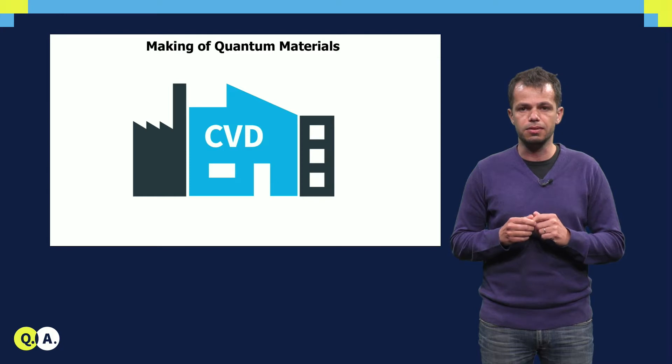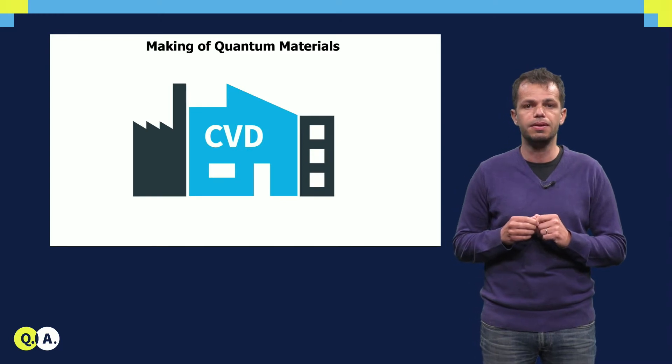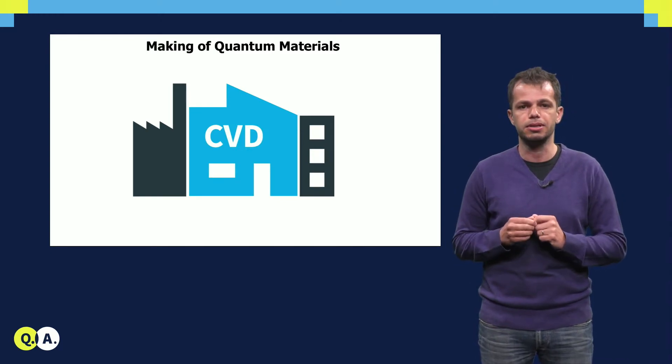Chemical vapor deposition, or CVD, is an industrial process that uses high-purity gases to make high-quality materials with desired physical and electronic properties.